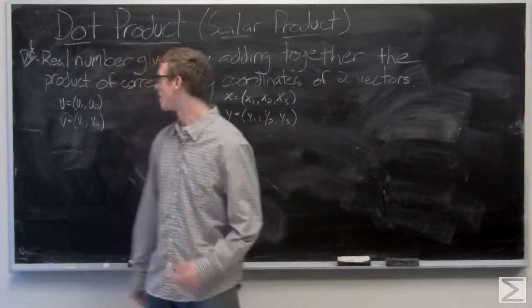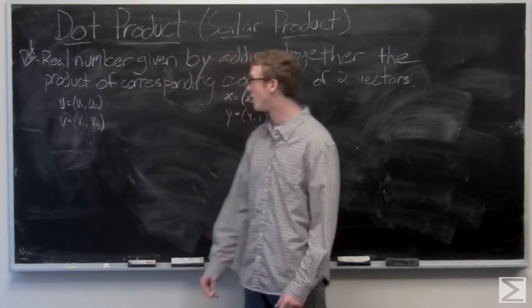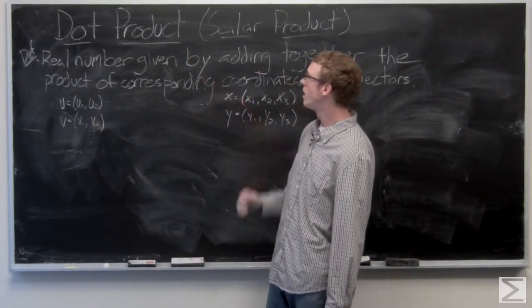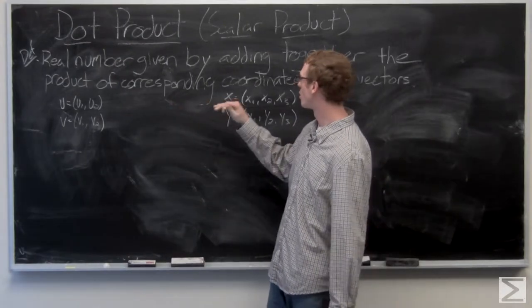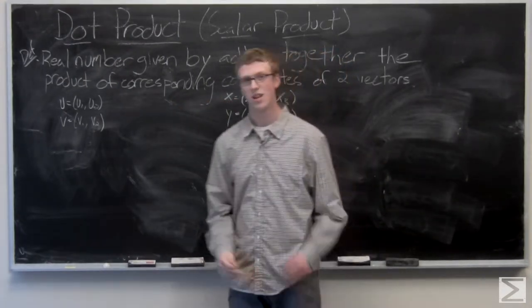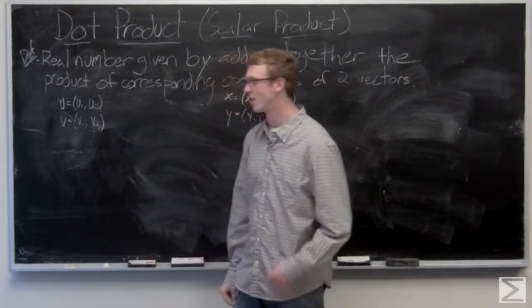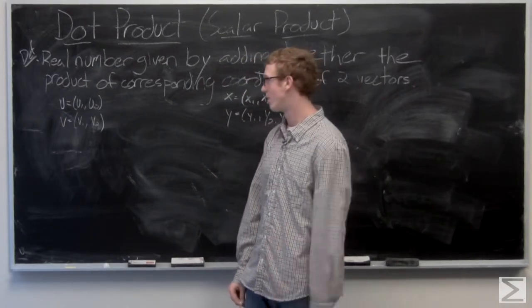Mathematicians love precise definitions, so here's the precise definition of the dot product. It is the real number given by adding together the product of corresponding coordinates of two vectors. That sounds kind of confusing, but when we break it down it's going to be really simple.